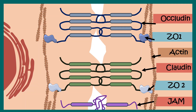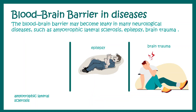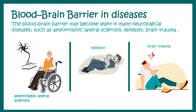This creates the selectivity filter and the stringency in terms of passage of certain molecules from the blood to the brain. The blood-brain barrier is implicated in many diseases such as ALS, epilepsy, brain trauma, and many other neurodegenerative diseases as well.